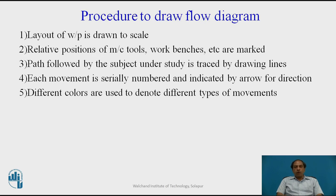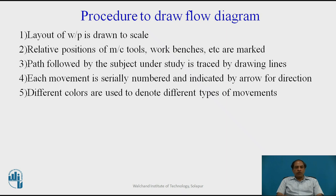Now let us understand the procedure for drawing a flow diagram. First, we have to have the layout of the work area drawn to scale. Then we have to show the relative positions of various machines, work benches, equipment and other accessories in the entire machine shop. We have to show the path followed by the material under study, traced by drawing lines. A thick line is generally drawn and arrow marks show the direction of the process. Each movement is serially numbered with arrows for direction, and different colors are used to denote different types of movements.